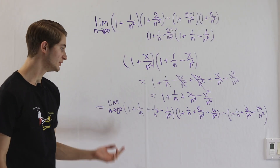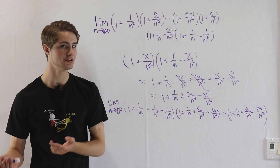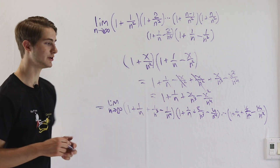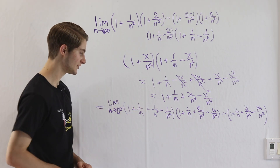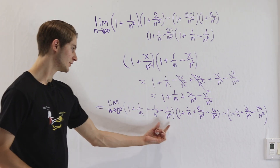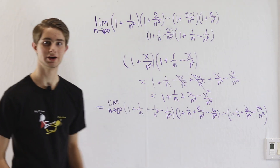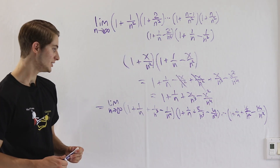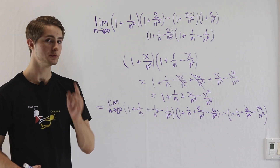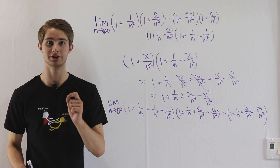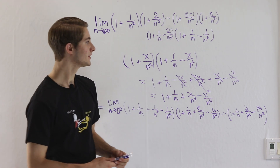At first it looks like we've changed the problem without really simplifying it at all. We do have this 1 plus 1 over n to start, but look at all these other random terms. How are we going to get rid of those? Well, the answer lies in some kind of variation of the squeeze theorem.